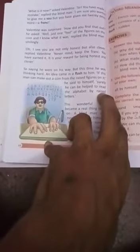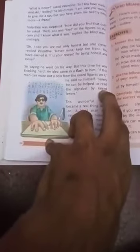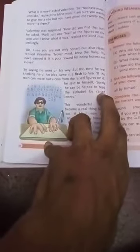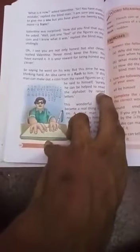So he was saying to himself, surely he can be helped, so he can help him to read the alphabet by raising the letter. So he thought that he can read if I could raise the letters of alphabet.